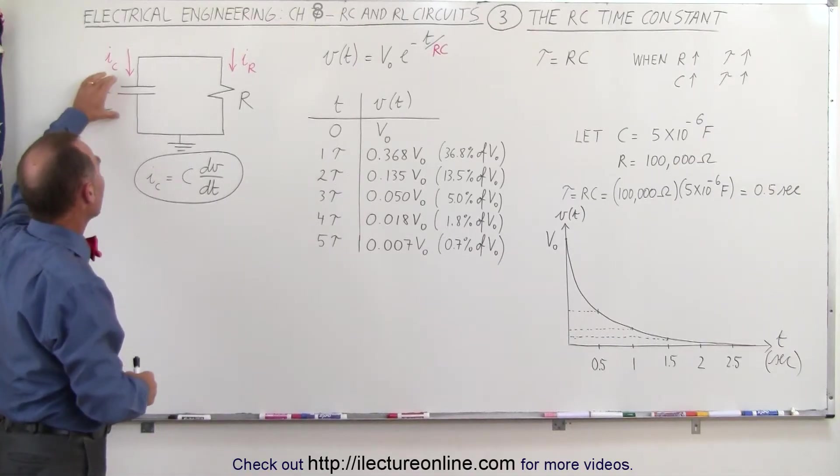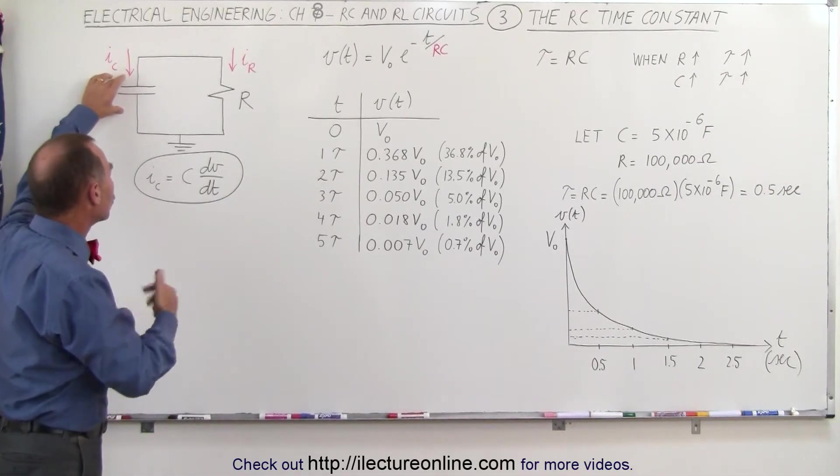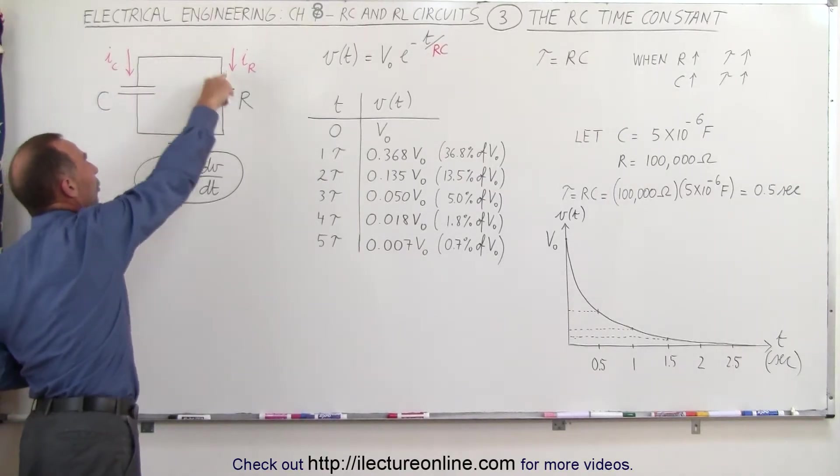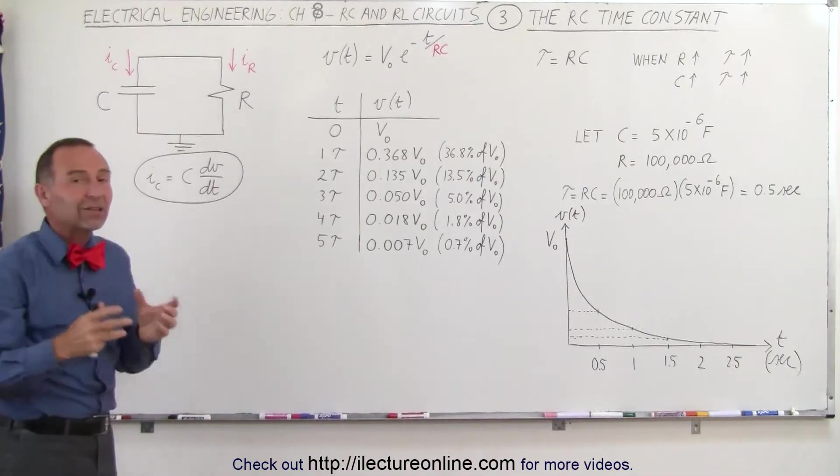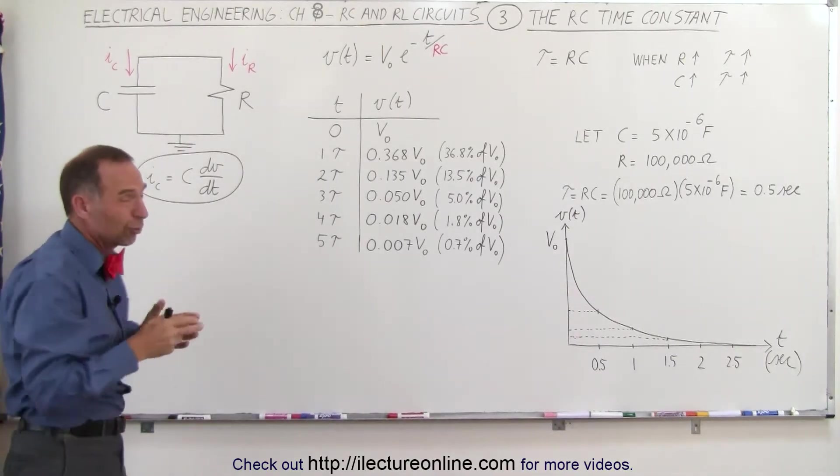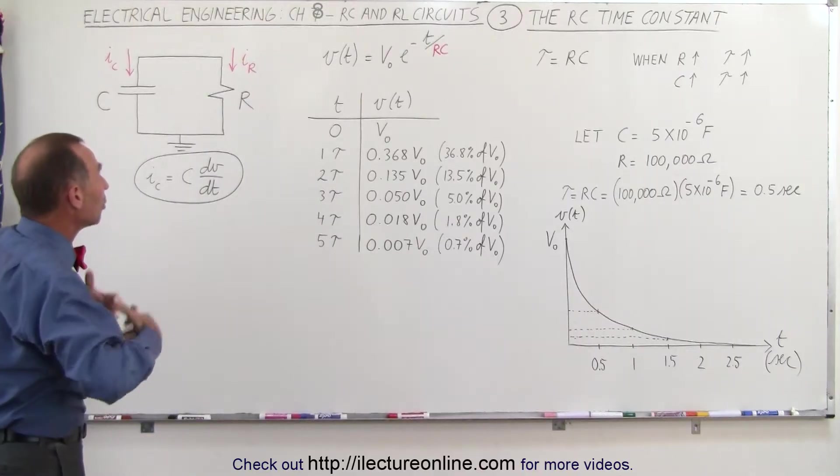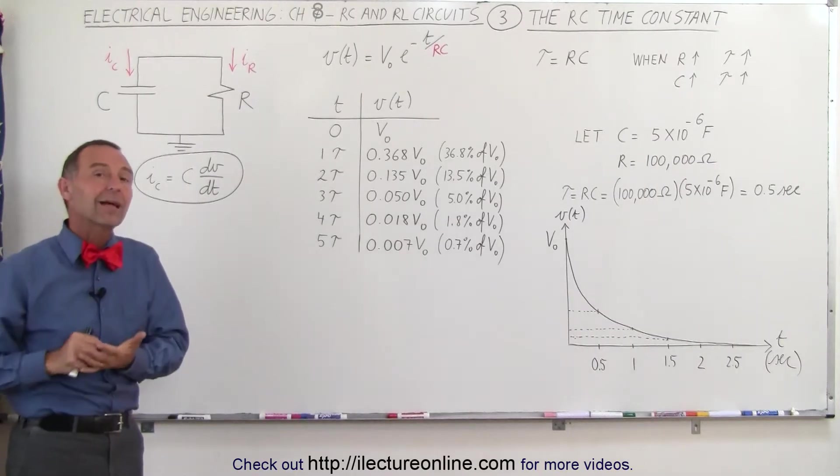In this case, we assume that the capacitor had an initial charge on it, called Q sub naught, and over time, the charge will simply leak off from one side, go to the resistor, go to the other side until the capacitor is no longer charged. In other words, until the charge on both sides of the capacitor is equal. How long will that take? Well, that depends on the time constant.